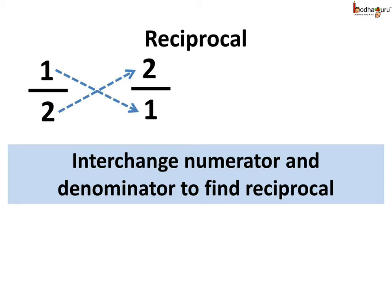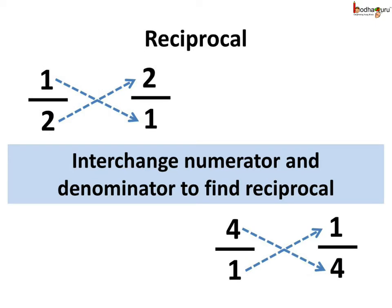As we know, when the numerator and the denominator interchange places, we get the reciprocal of the original number. Like, the reciprocal of 1 by 2 is 2 by 1, or 2. And the reciprocal of 4, which can be written as 4 by 1, is 1 by 4. So we can say, dividing by a rational number is actually multiplying by the reciprocal of that rational number.